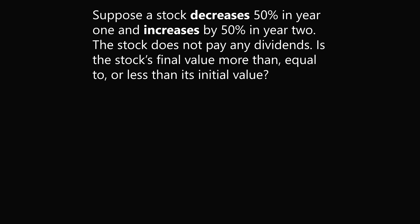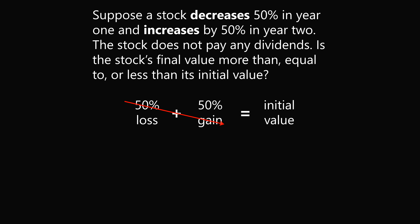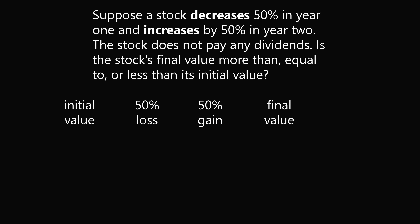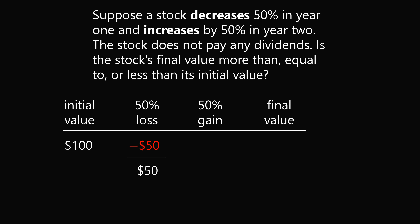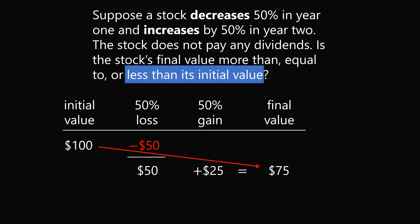So what were they doing wrong? Here's how many people approached the problem: they thought a 50% loss plus a 50% gain would cancel out to equal the initial value. But the correct answer is you would lose money. Let's work out an example. Say you invest $100. A 50% loss is a loss of $50, leaving you with $50. Then you gain 50% on that, which is $25. So $50 plus $25 gives a final value of $75 — less than the initial value. That's the correct answer.